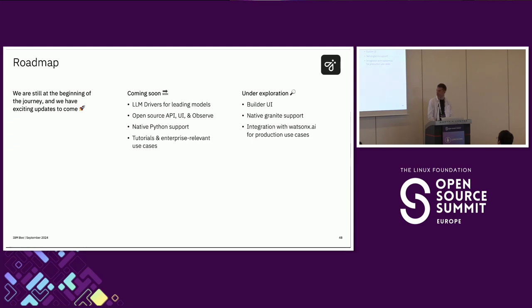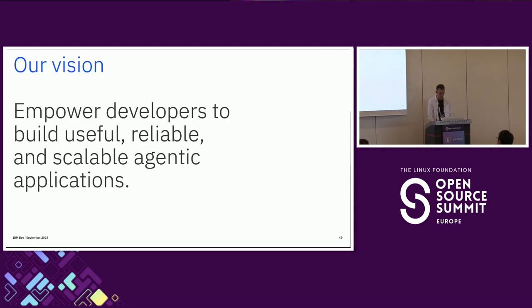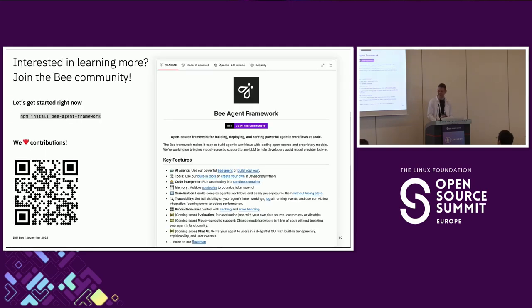What's on the roadmap? The biggest feature we'd like to bring very soon is model-specific LLM drivers, because developing an agent that just works on an arbitrary model is hard and we're trying to solve this. We'd also like to open-source our UI, API, and the observe module very soon. We are also focusing on a Python version. Our vision is to empower developers to build useful and scalable agentic applications — if you are interested in our framework, feel free to check it out and get started.